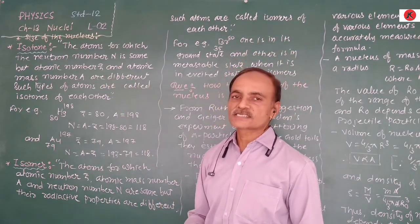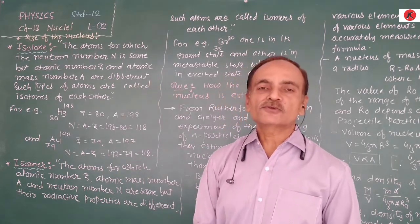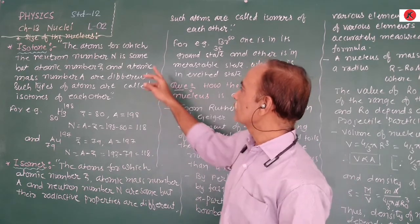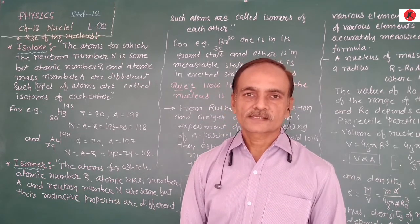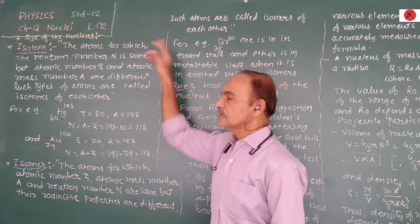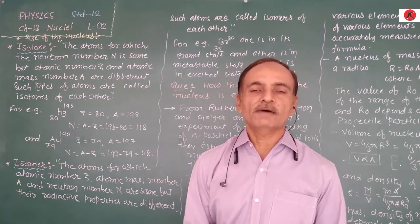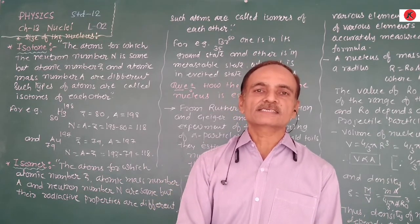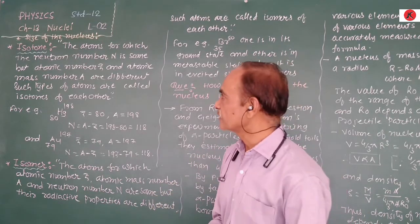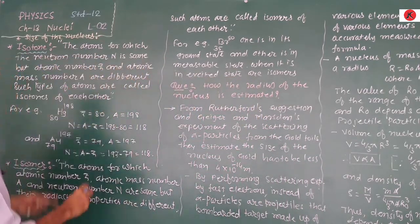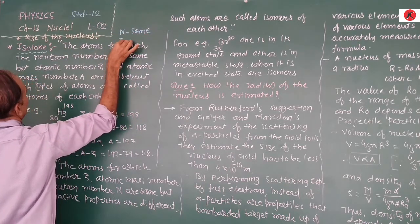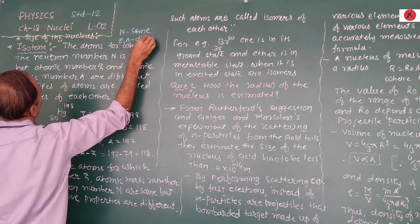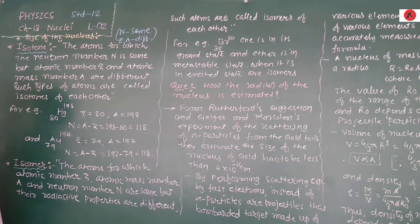The third type is isotones. Isotones are atoms for which the neutron number N is the same, but the atomic number Z and atomic mass number A are different. Atoms having the same number of neutrons in the nucleus but different atomic number Z and atomic mass number A are known as isotones of each other.